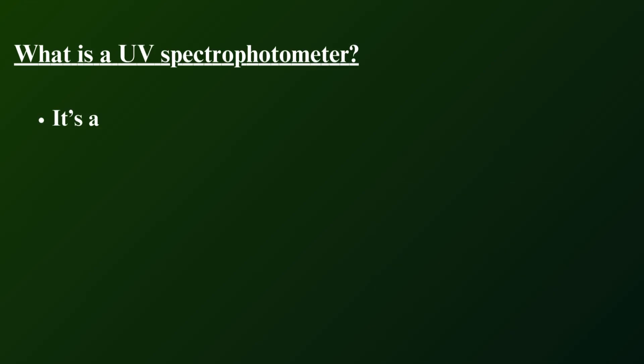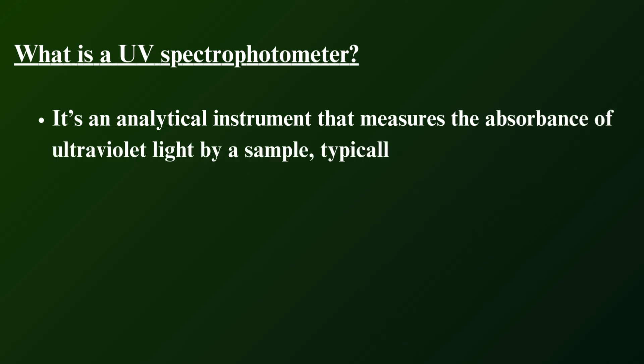the UV spectrophotometer. What is a UV spectrophotometer? It's an analytical instrument that measures the absorbance of ultraviolet light by a sample, typically in the range of 200 to 400 nanometers.